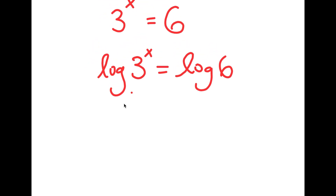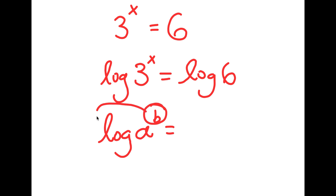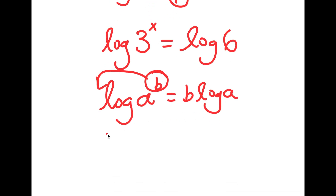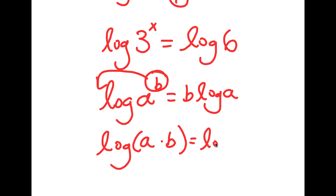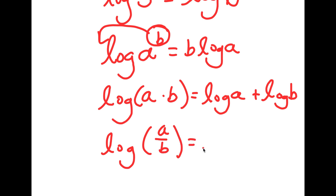And there are actually three important logarithmic properties that you should know. The first one is that if I have something in the form log a to the power of b, I can move this exponent b to the front, so this equals b times log a. The second one is that log of a times b equals log a plus log b. And finally, log of a over b equals log a minus log b.